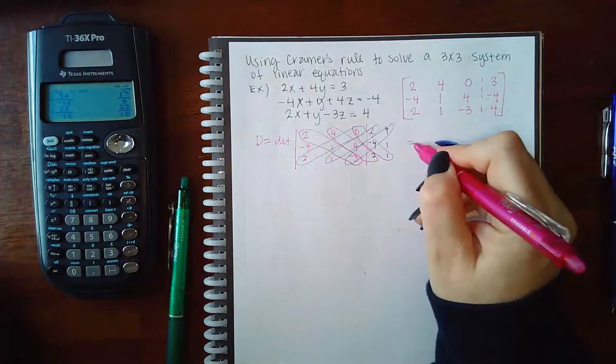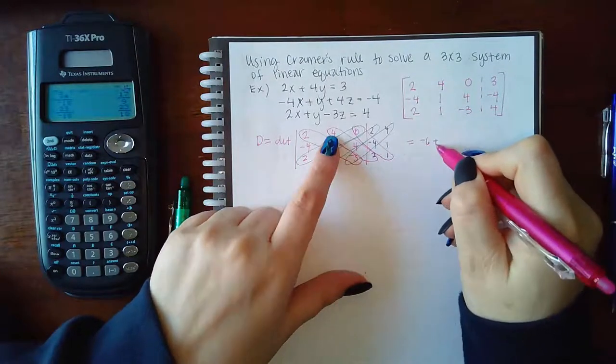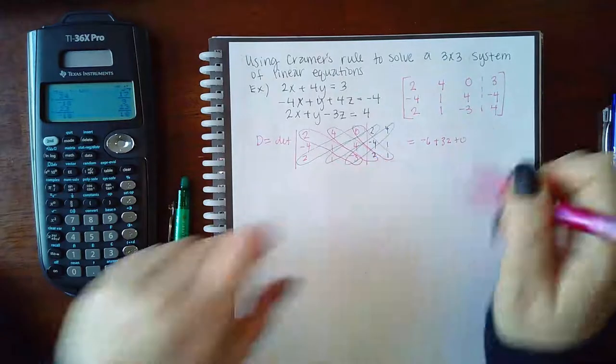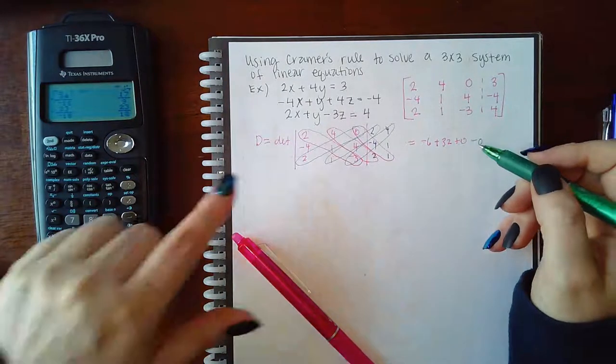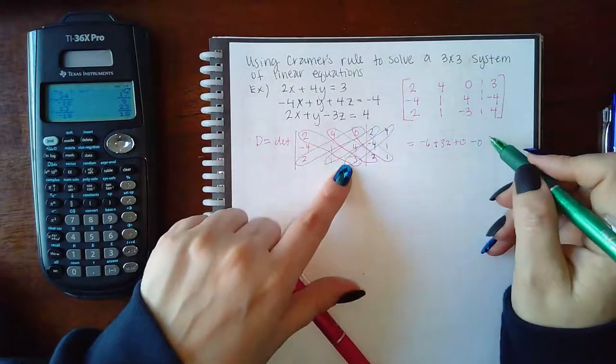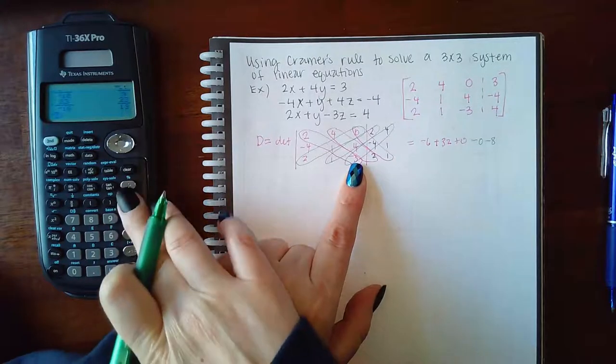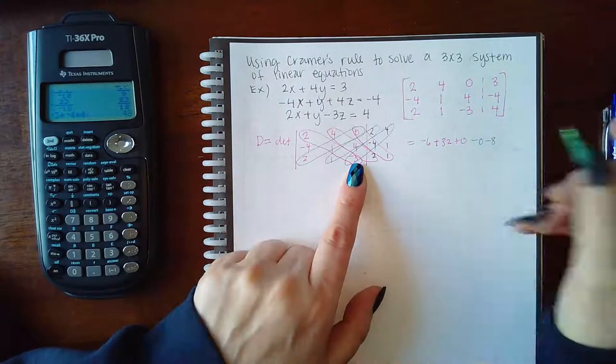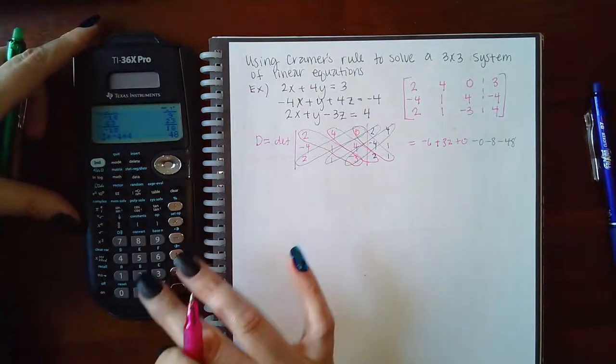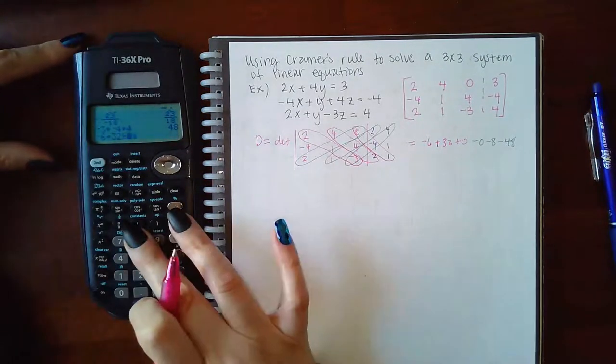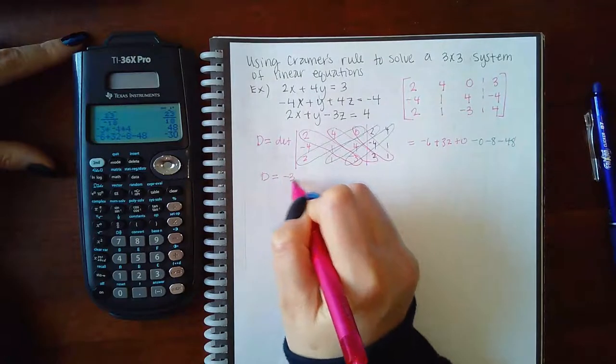So let's see what we get here. We get negative six plus 32 plus zero minus zero minus eight. And that's a negative three. So negative three times negative four times four. So minus a 48. And so then let's see what do we end up with. Negative six plus 32 minus eight minus 48. We end up with negative 30. So D equals negative 30.